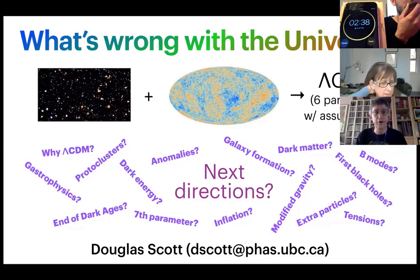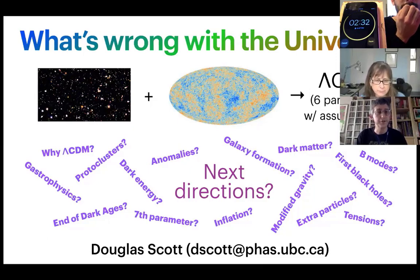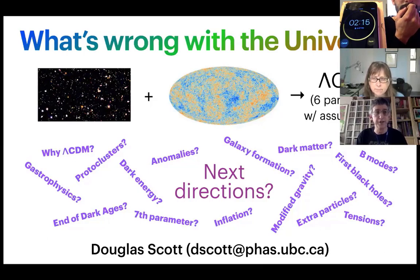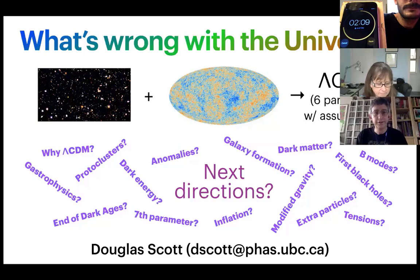Putting all of that together, we have a simple model that describes the large-scale universe called the Lambda CDM model — a cosmological constant dominated cold dark matter model with just six parameters and some fairly simplifying assumptions. The parameters are now known to two, three, or four digits in some cases, so we really are now doing precision science. This model is incredibly successful at fitting a wide range of data.